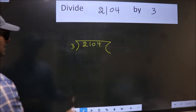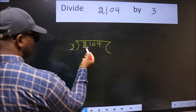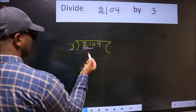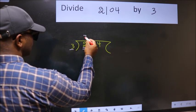Next. Here we have 2 and here 3. 2 is smaller than 3. So, we should take 2 numbers: 21. When do we get 21 in 3 table? 3 7s 21.